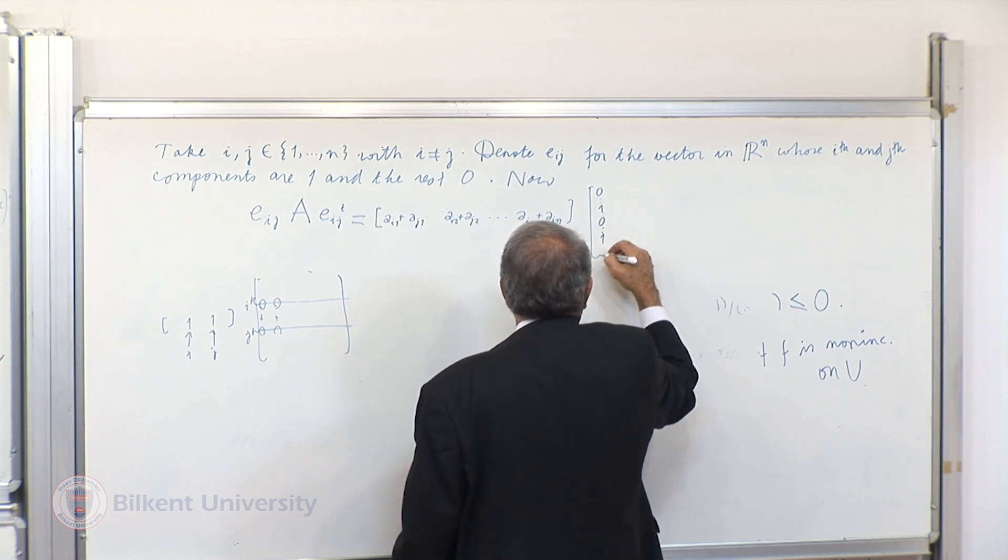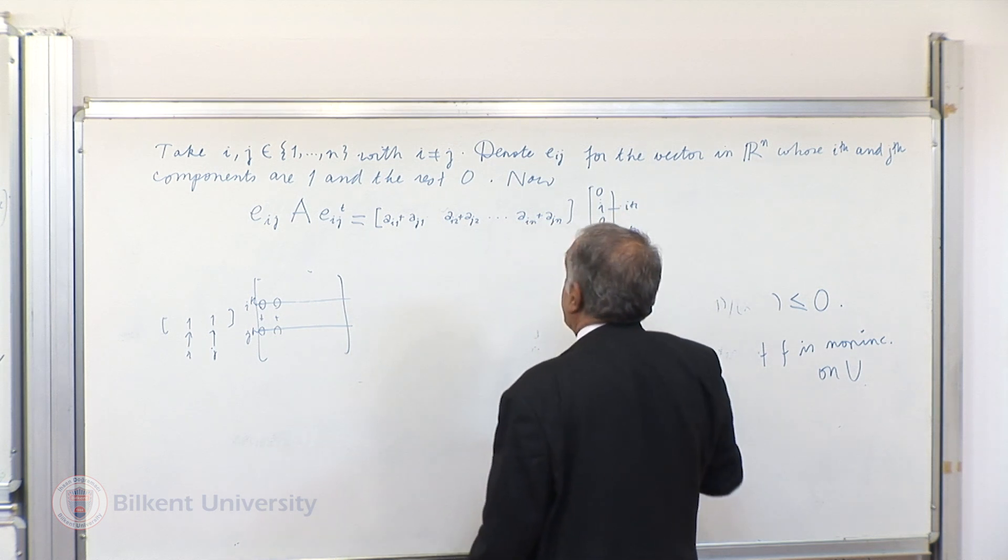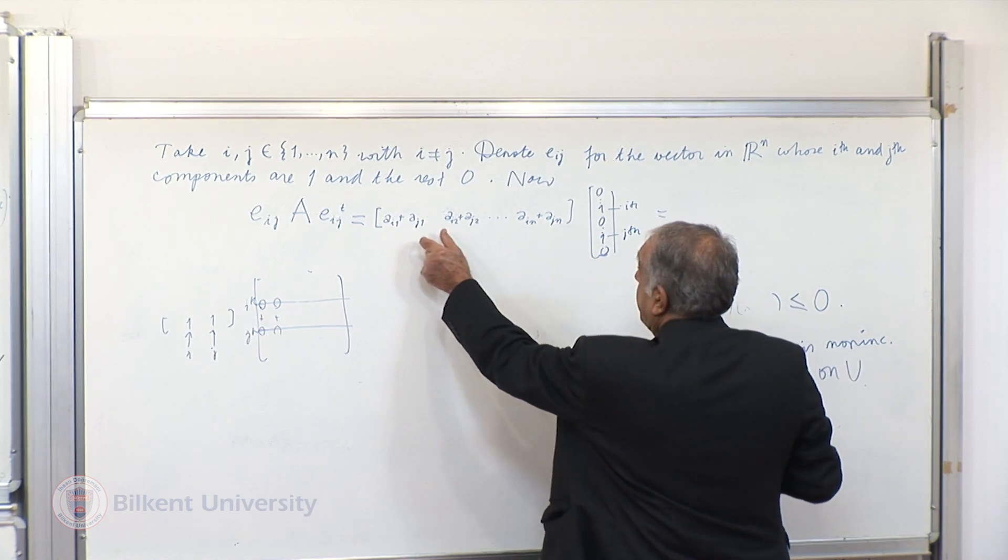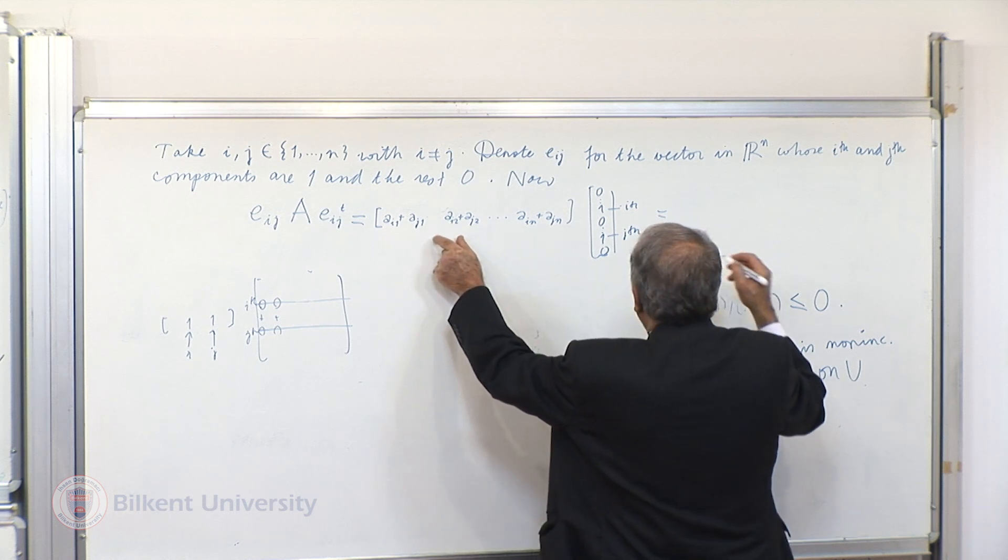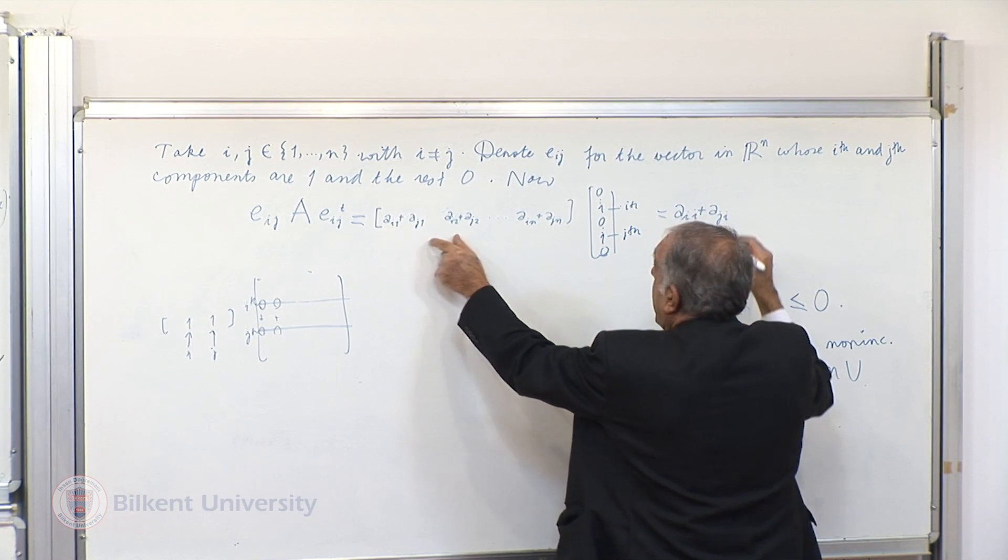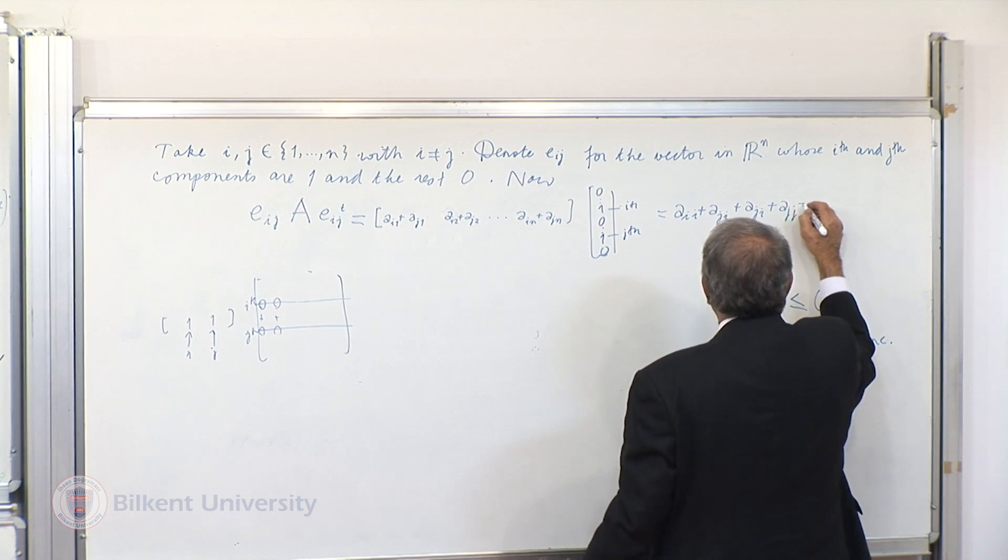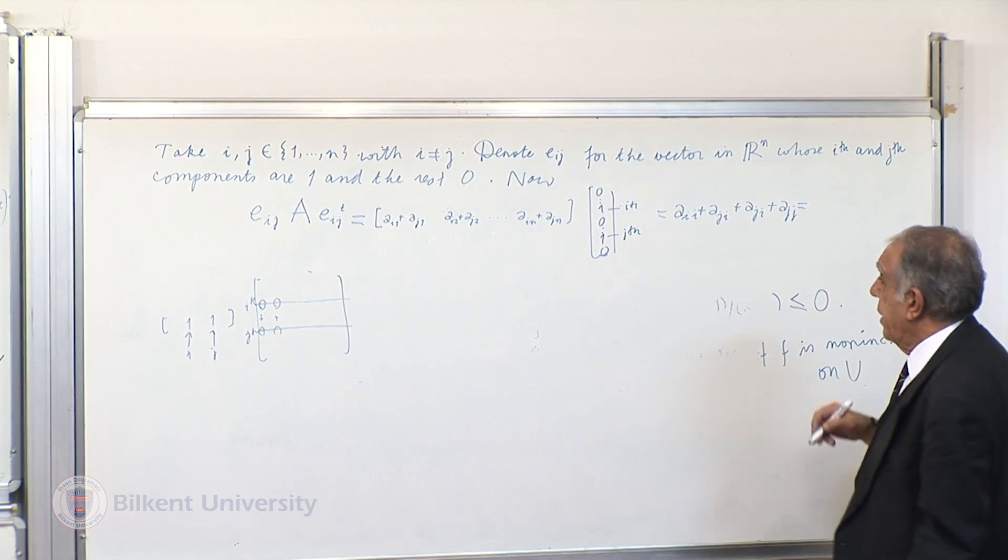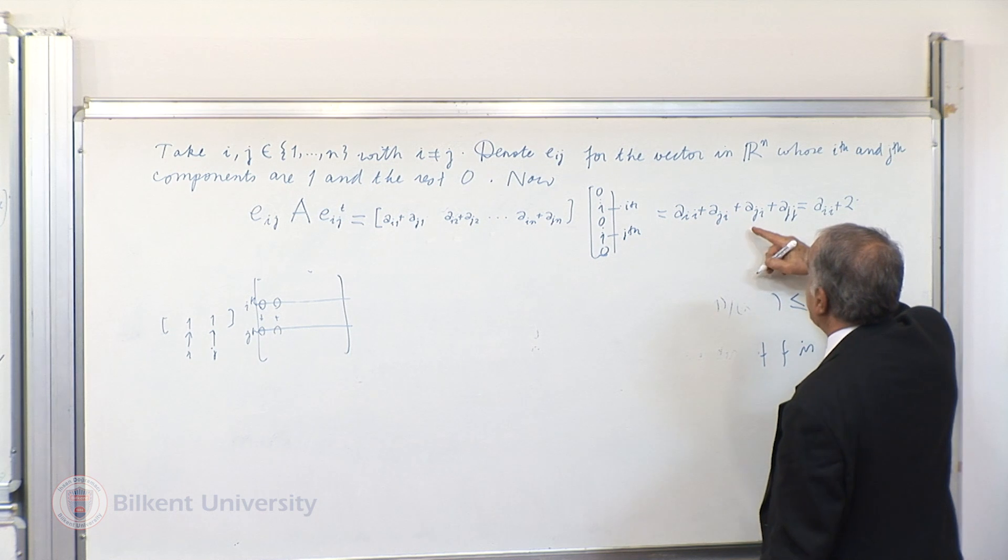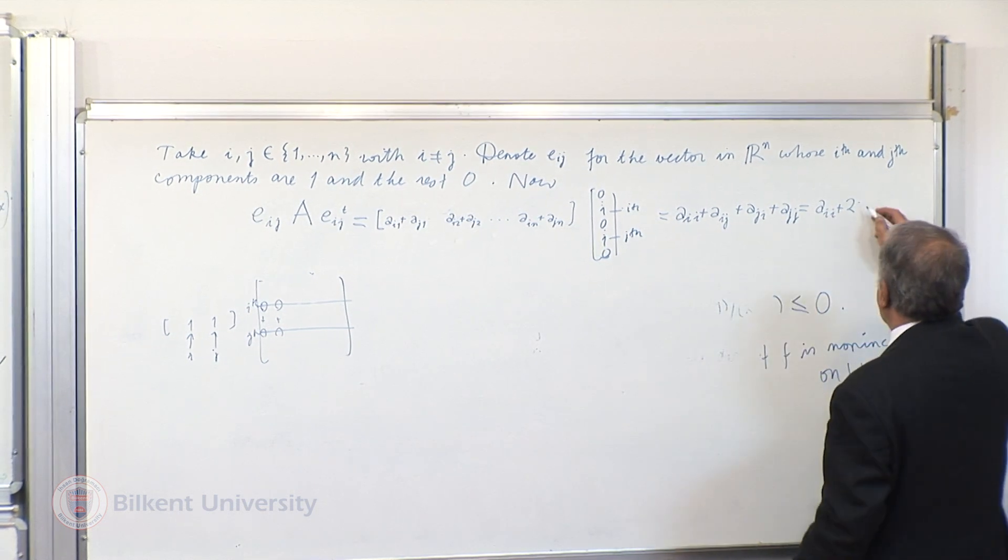The i-th column will be A_ii plus A_ji, and the j-th column will be A_ij plus A_jj. But by symmetry, this will be A_ii plus A_ij plus A_jj. I'm sorry, this is i-j. But by symmetry, these will be equal to each other, 2A_ij plus A_ii plus A_jj.